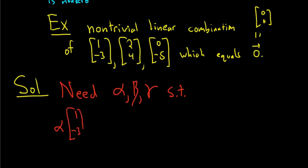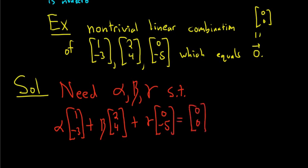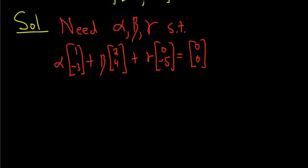alpha times our first vector. So alpha times 1, negative 3, plus beta times 2, 4, plus gamma times 0, negative 5. And this needs to somehow magically equal the 0 vector. Now, we could just make them all 0 and it would work, but then that would be a trivial linear combination. The goal is to find a non-trivial one. So they can't all be 0. So at least one of them has to be not 0.